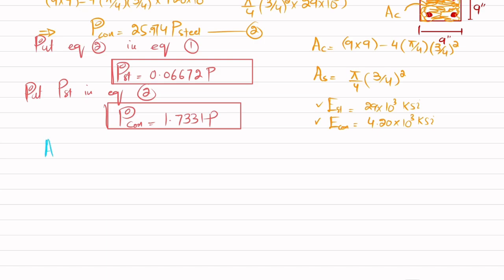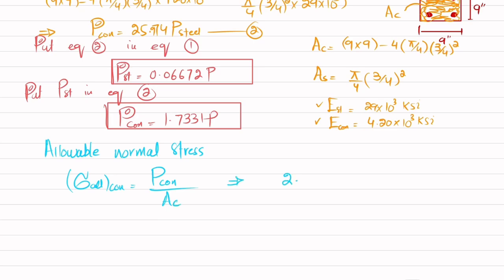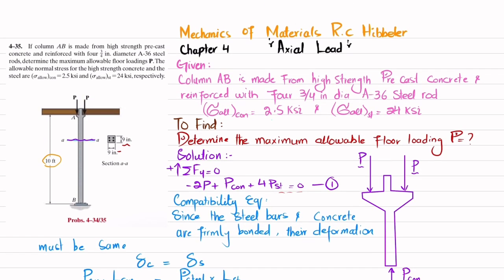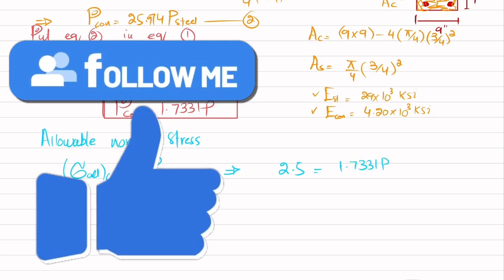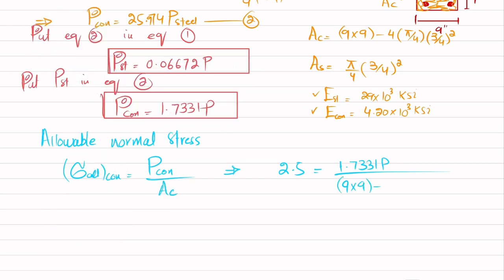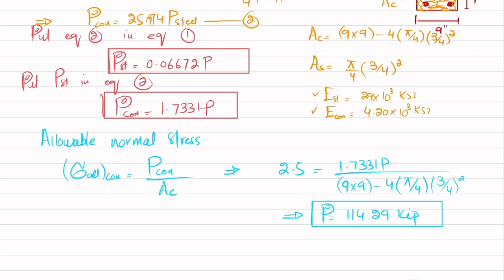Now we apply the allowable normal stresses. The allowable normal stress for concrete equals P_concrete divided by area of concrete. The allowable stress for concrete is 2.5 ksi, so: 2.5 = (1.7331·P) / (9×9 − 4·(π/4)·(3/4)²). Solving this gives P = 114.29 kips. This is the maximum load based on the concrete stress limit.